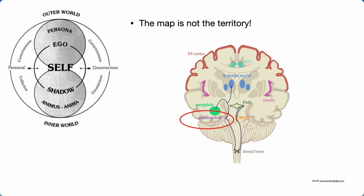Just wanted to clarify that Jung's map of the psyche is a model, not actual precise brain regions. Starting at the top, the outer world refers to the physical things and people that exist outside of yourself, and the inner world is everything inside of yourself. Jung refers to anything outside of yourself as objects and you and anything pertaining to you as subjects. Objects equal outer, subjects equal inner.